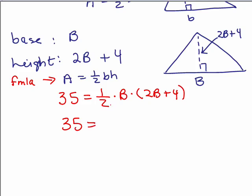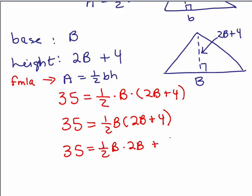First, I'm just going to think of this as one-half B, just kind of putting it together, times 2B plus 4, right? And so if I do the distributive property, I have one-half B times 2B plus one-half B times 4.